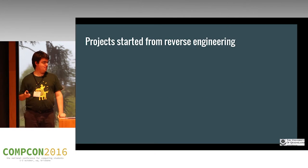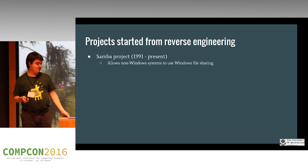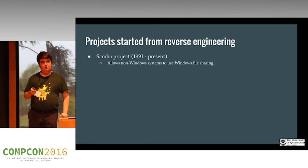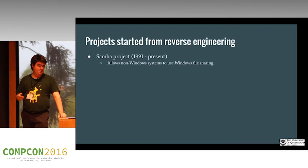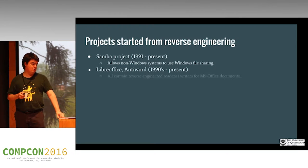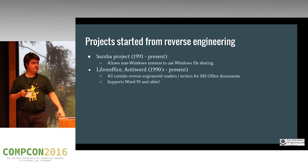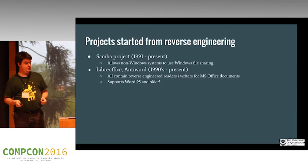Some examples of projects that started out from reverse engineering: the Samba project allows non-Windows systems to interact with Windows file sharing protocols — it was started by Andrew Tridgell, who is based in Australia, and he started out reverse engineering the NetBIOS protocol. Another good project is things like LibreOffice, StarOffice, OpenOffice, AntiWord — they contain reverse engineered readers and writers for Microsoft Office documents, supporting obscure things like Word for Windows 95, basically built up from first principles.